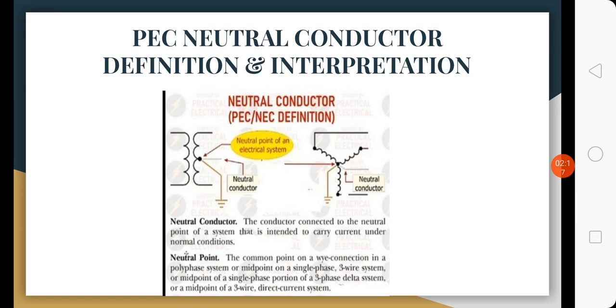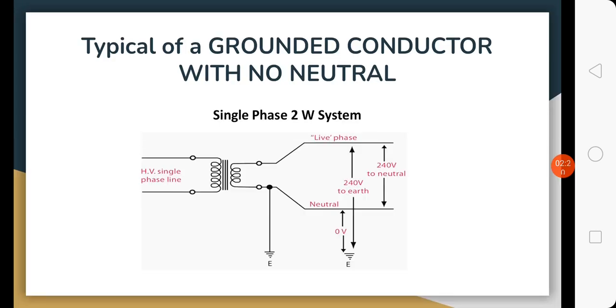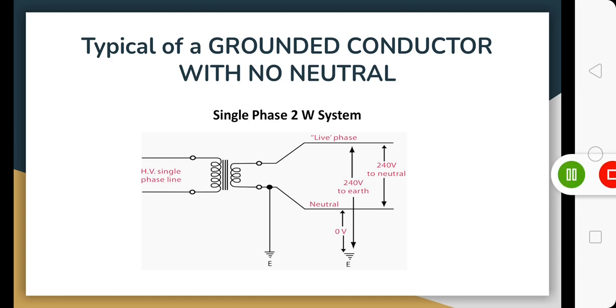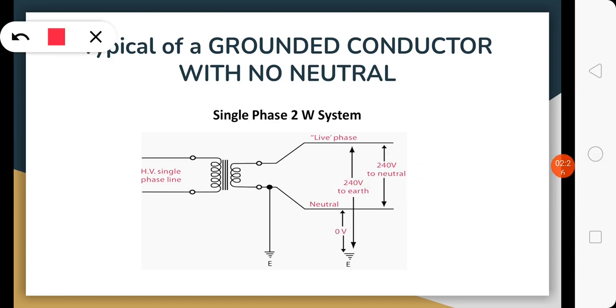This is a typical grounded conductor without a neutral. This is a single phase two-wire system. You have line one and line two, but they call line two a neutral also, which is commonly called this in far-flung areas in the province. But actually this is a grounded conductor—one of the ungrounded conductors.